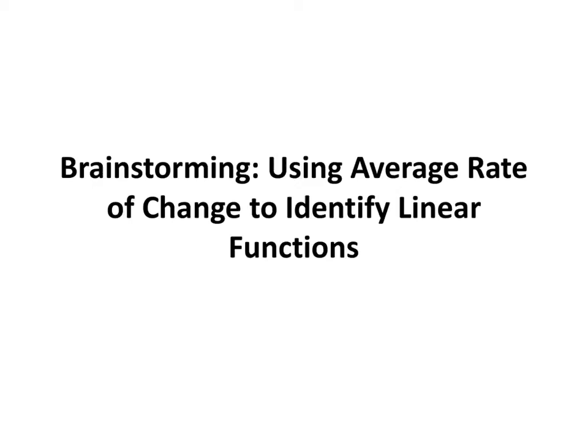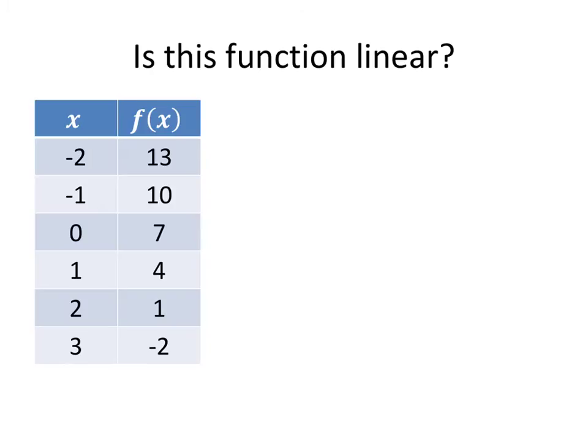In this video, we'll learn about using the average rate of change to identify whether or not a function is a linear function. The main idea is that we want to take advantage of a nice property of linear functions, which is that no matter which two points you choose on your linear function, if you compute the average rate of change, that average rate of change always works out to be the same number.